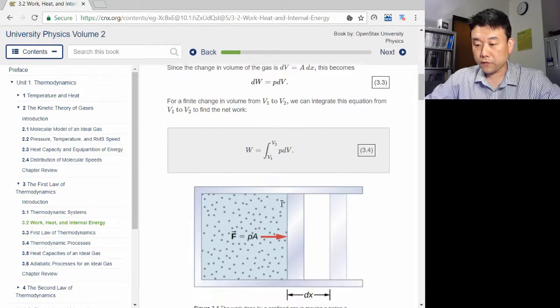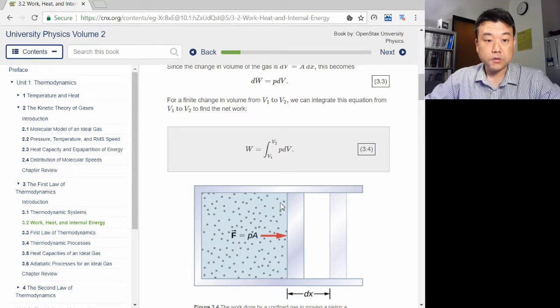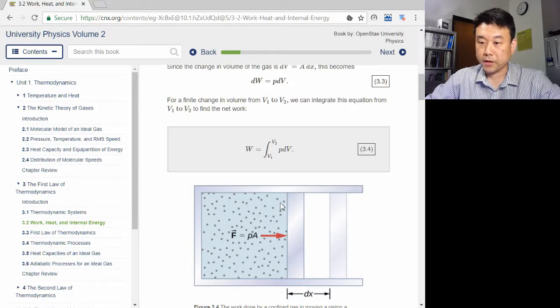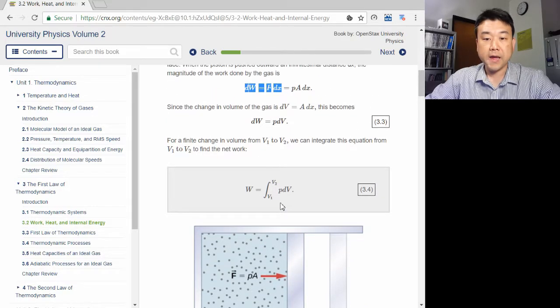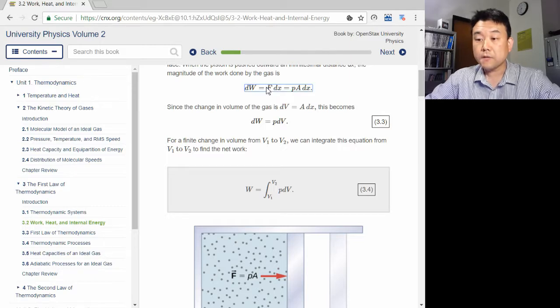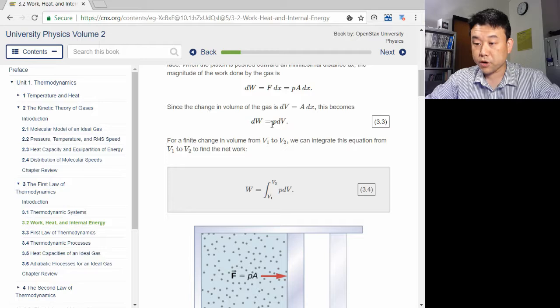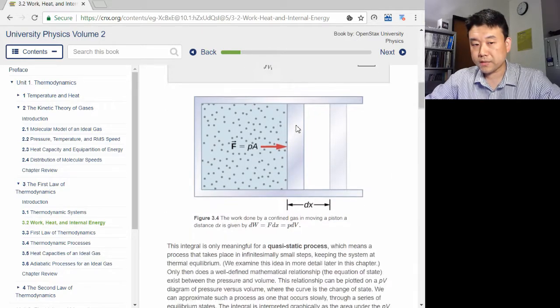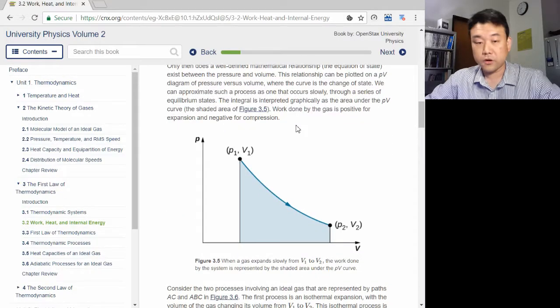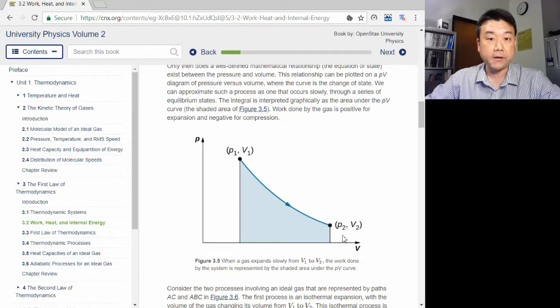Using this model of a piston, you can follow the short derivation to see that for a gas, force times displacement is equal to pressure times change in volume.